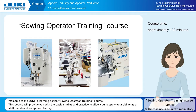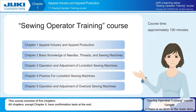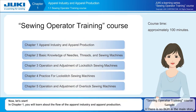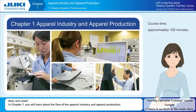practice to allow you to apply your ability as a staff member at an apparel factory. This course consists of five chapters. All chapters except chapter four have confirmation tests at the end. Now let's start.